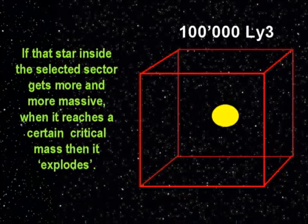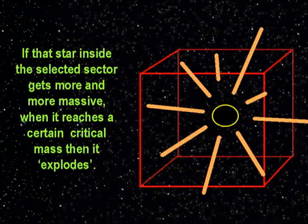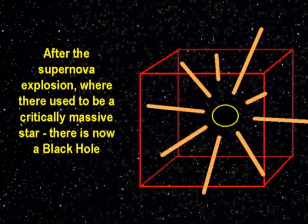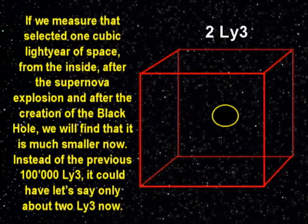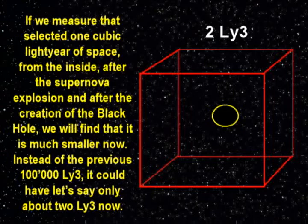If that star inside the sector gets more and more massive, when it reaches a certain critical mass, then it explodes. After the supernova explosion, where there used to be a critically massive star, there is now a black hole. If we measure that selected one cubic light year of space from the inside after the supernova and the creation of the black hole, we will find that it is much smaller — instead of the previous 100,000 cubic light years, it could have only about two cubic light years now.